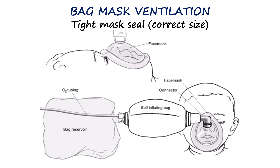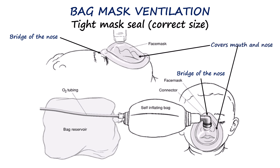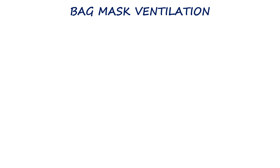The next important step in bag and mask ventilation is achieving a tight seal. The first step is to ensure that we select the correct mask size. The mask should extend from the bridge of the nose to the cleft of the chin, covering both the nose and mouth without pressing on the eyes. A mask that is too large may leak around the chin or compress the eyes, while one that is too small may not fully enclose the airway.